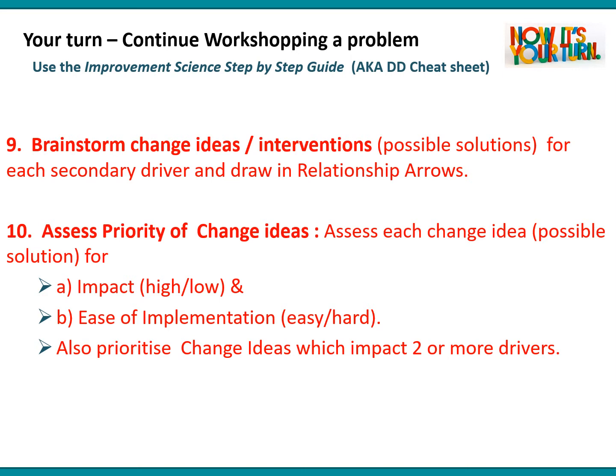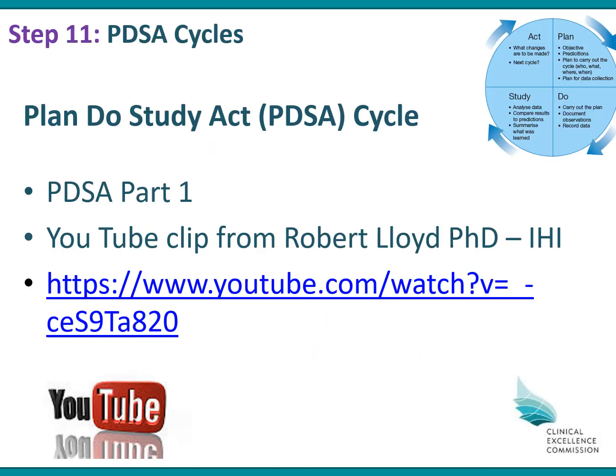Step 11 is to assess the priority of all the change ideas. Look at each change idea and work out whether it's high or low impact on the aim and easy or hard to do. Also look at any change ideas that impact two or more secondary drivers and consider whether they might be something you want to do early on in a Plan, Do, Study, Act — or PDSA — cycle.